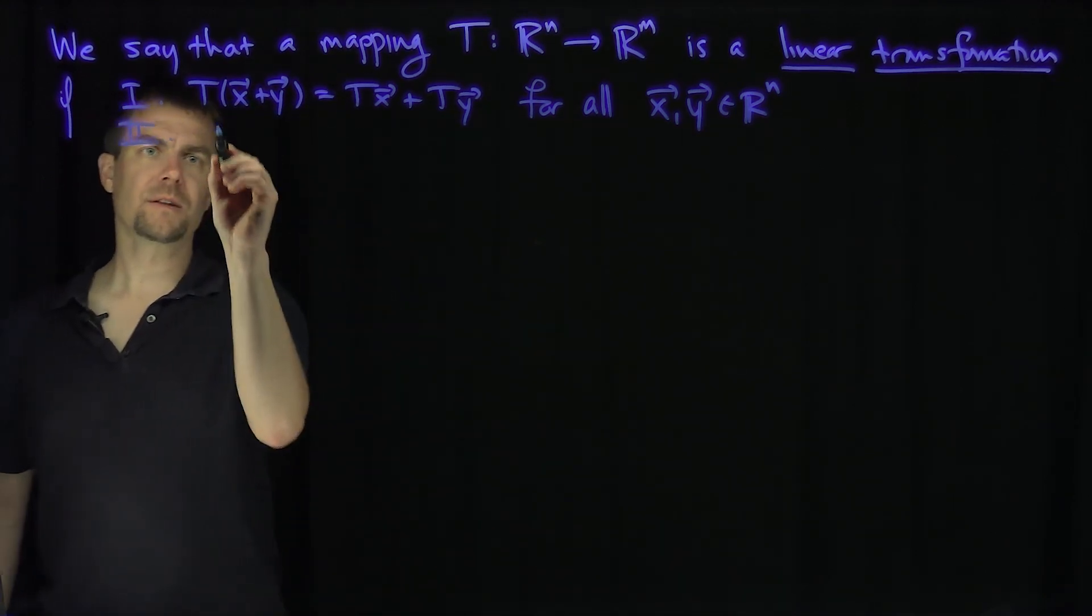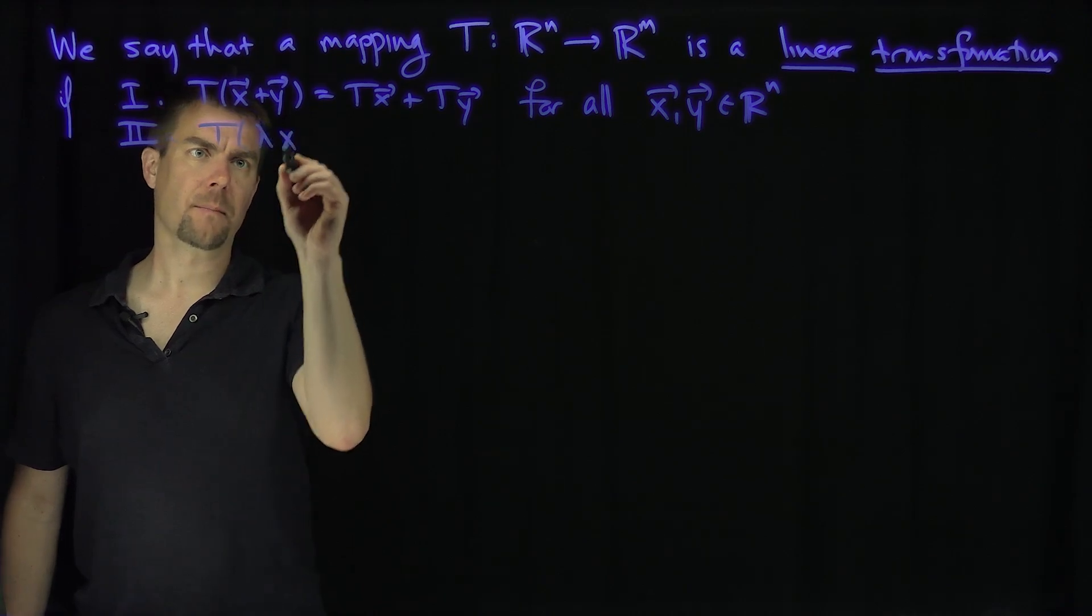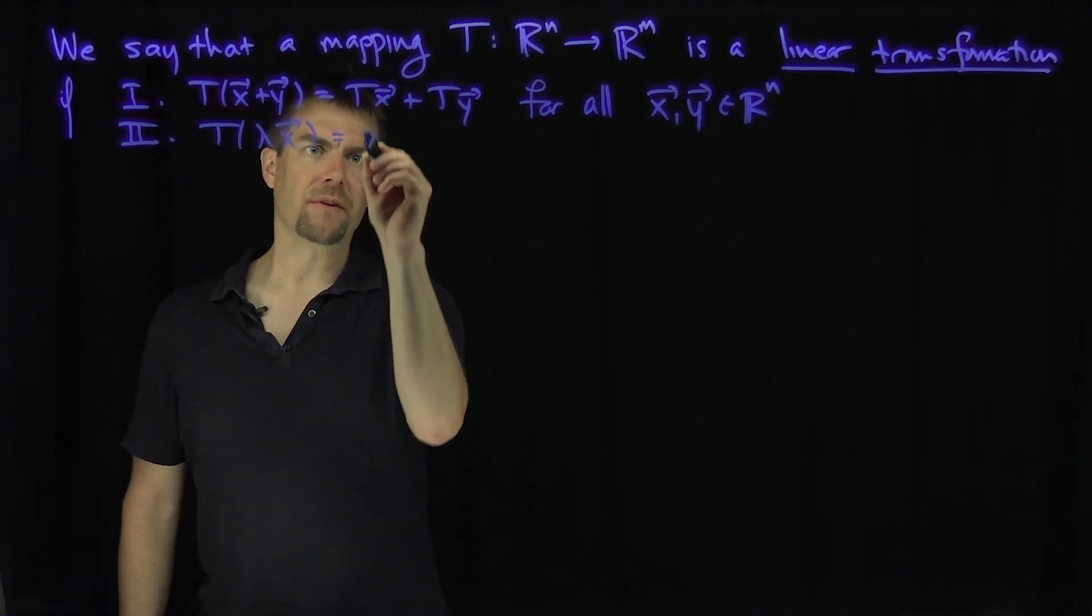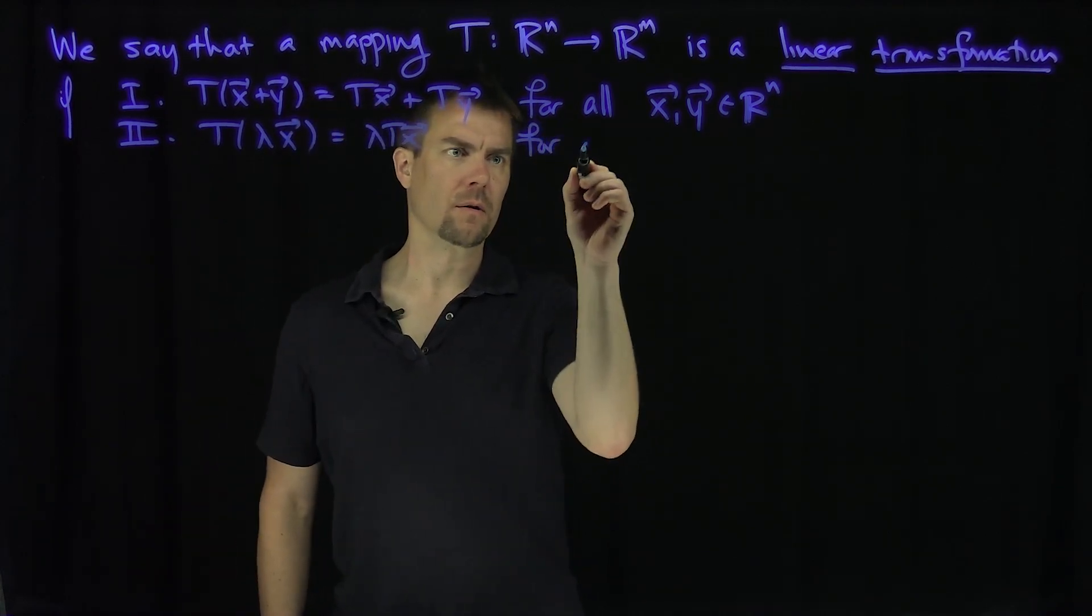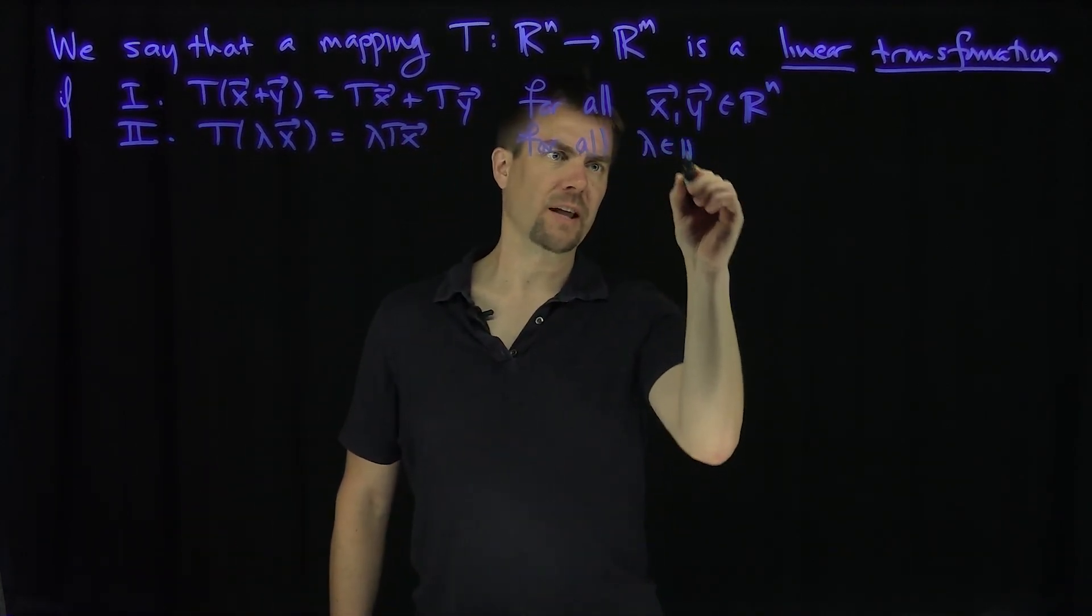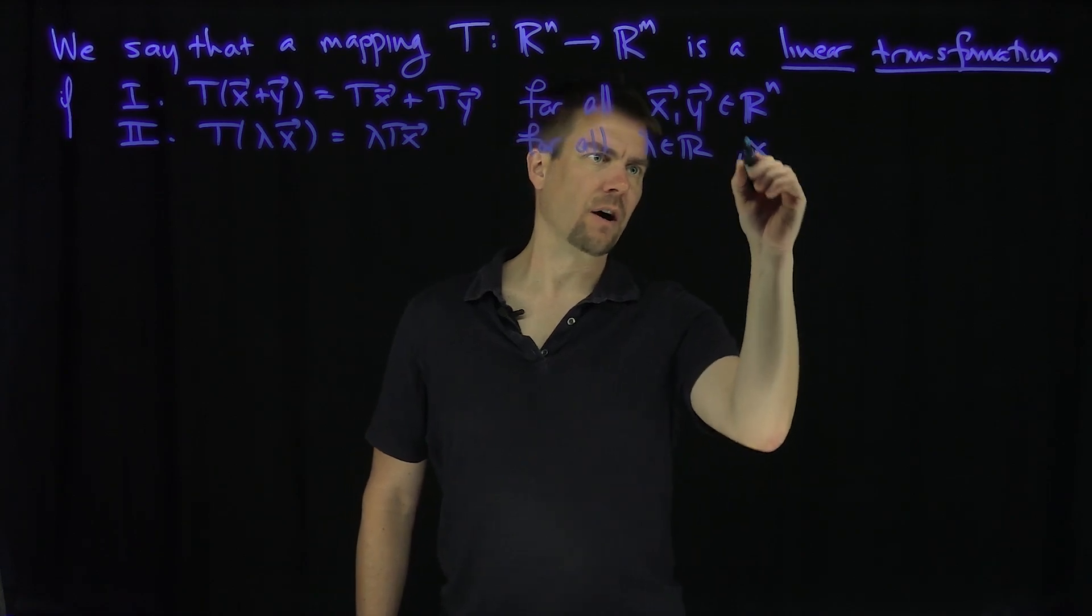And two, T of lambda x is equal to lambda T of x for all lambda in R, all scaling factors lambda and x in R^n.